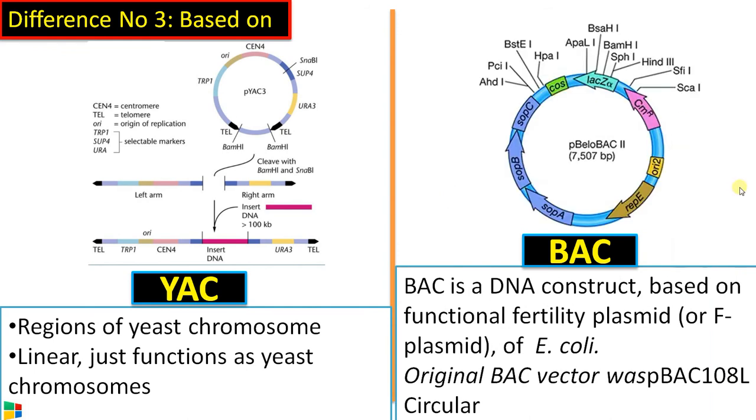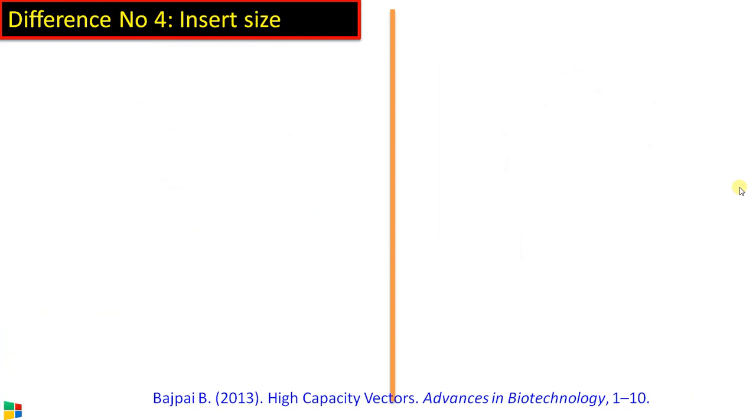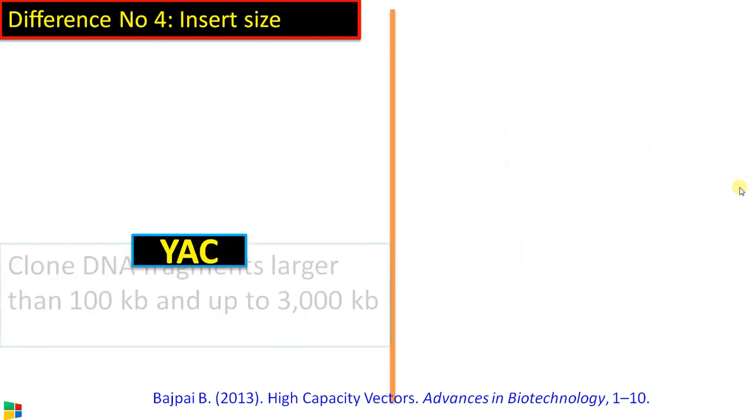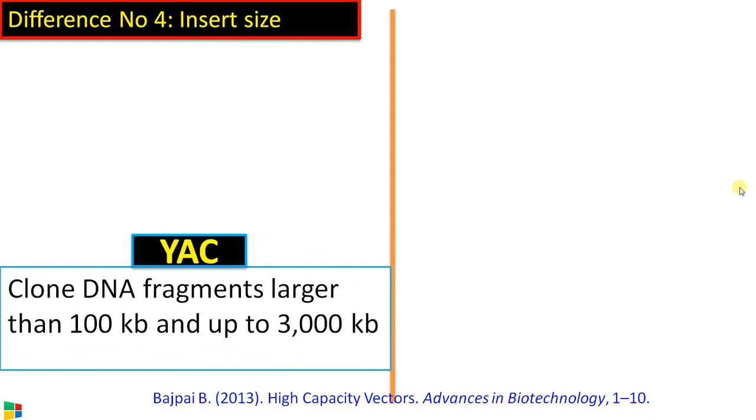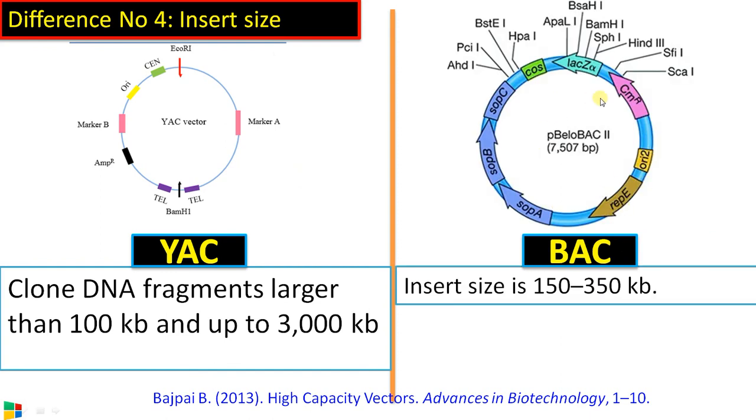Whereas BAC vector is based on fertility plasmid of E. coli. Difference number four regarding the insert size. In the case of YAC, it can clone DNA fragments larger than 100 KB up to 3000 KB. Whereas BAC vector can accommodate 150 to 350 KB of gene of interest.